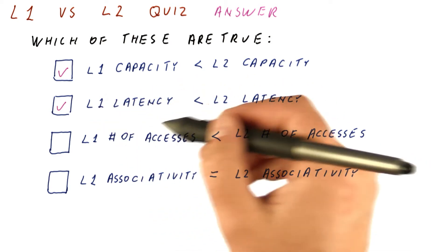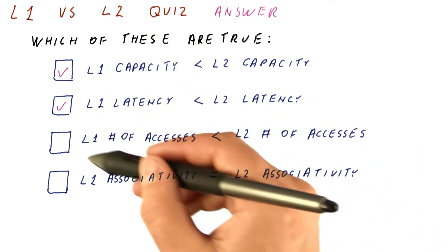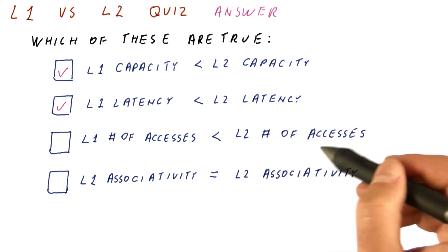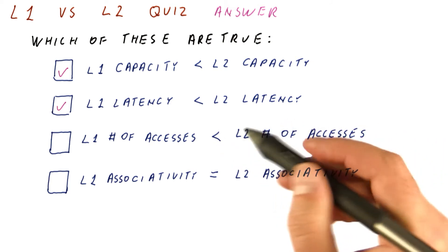The number of accesses in level one cache, is it lower than the number of accesses to L2 cache? This is not true.